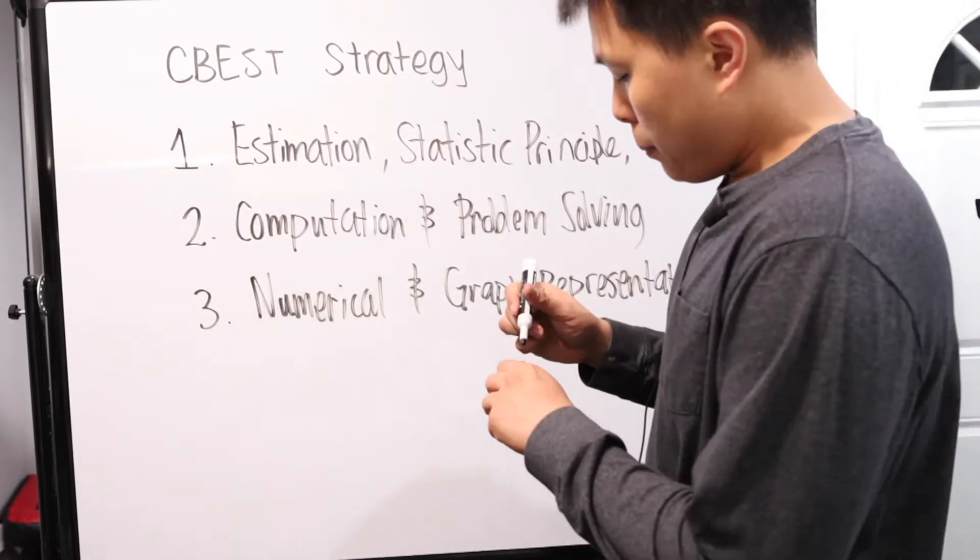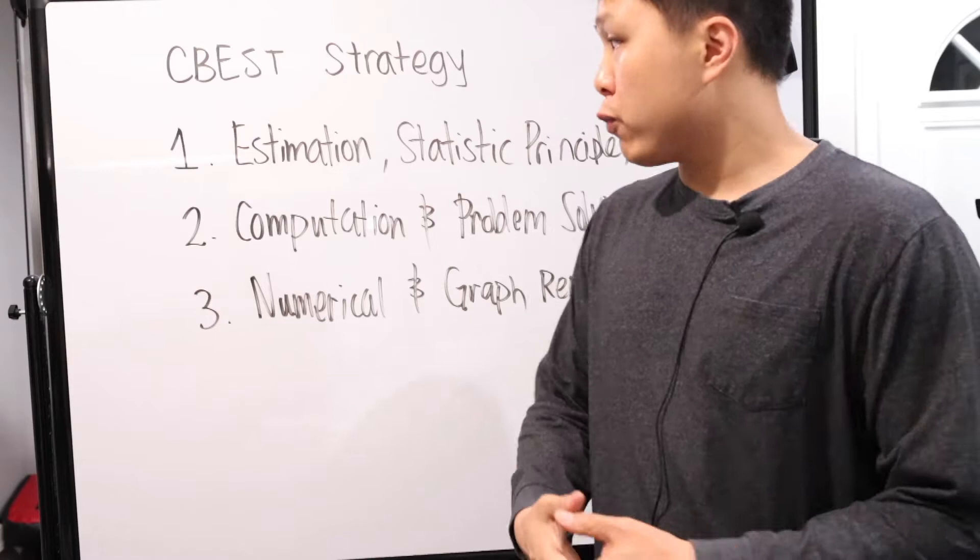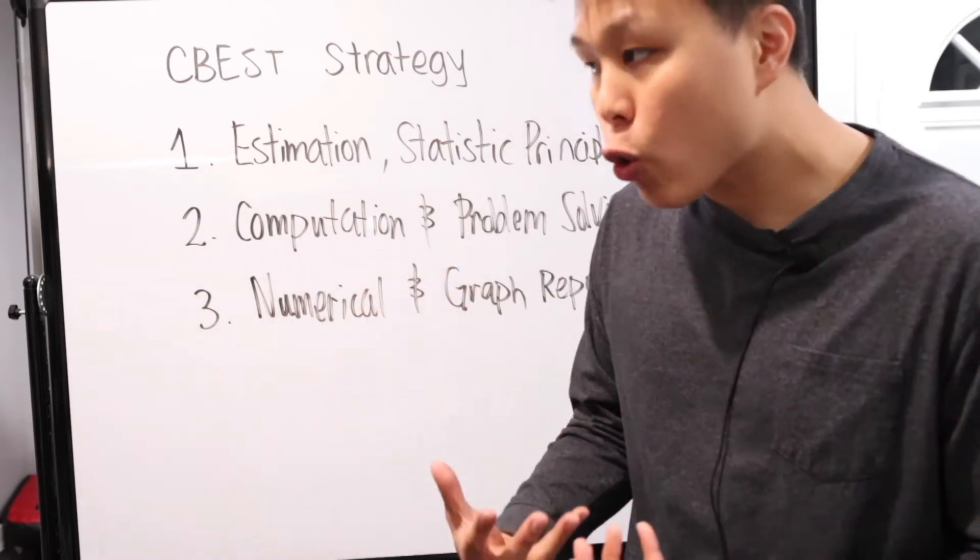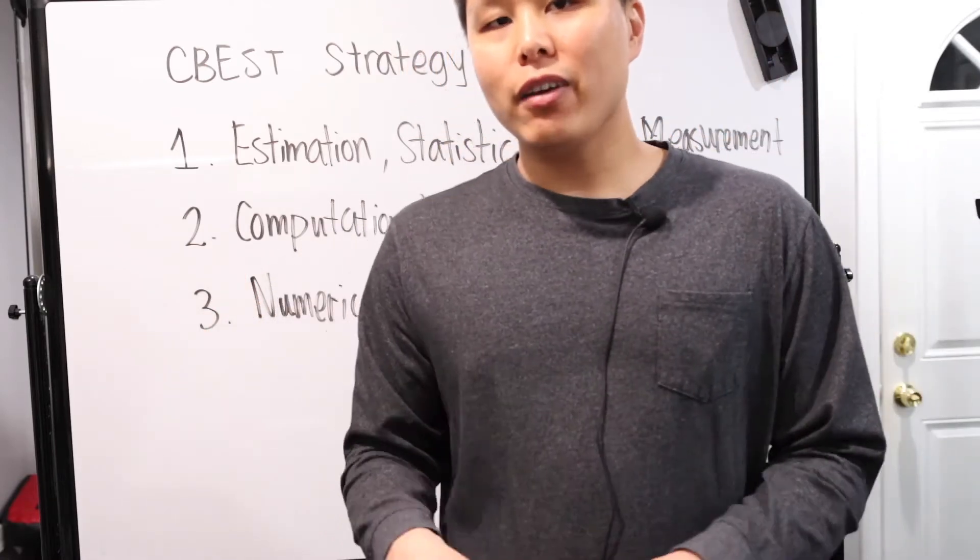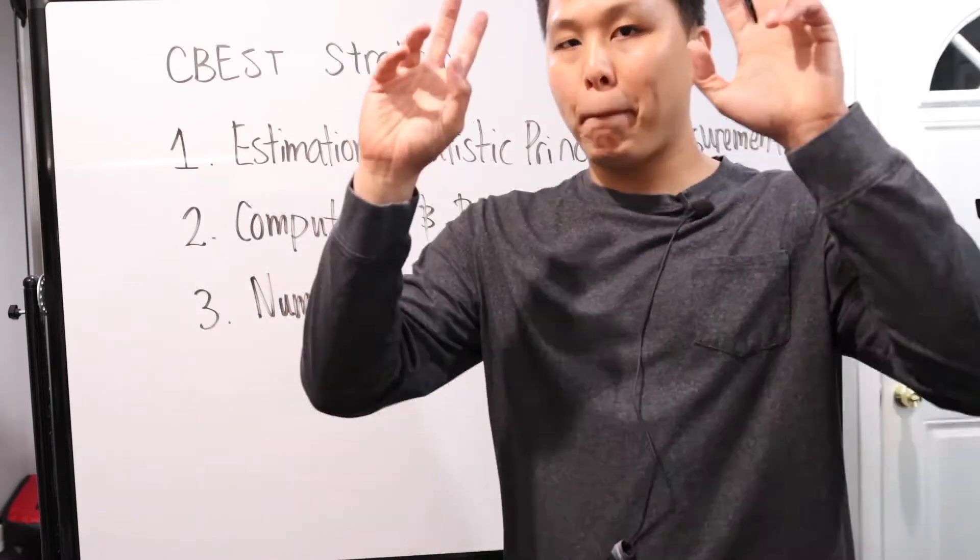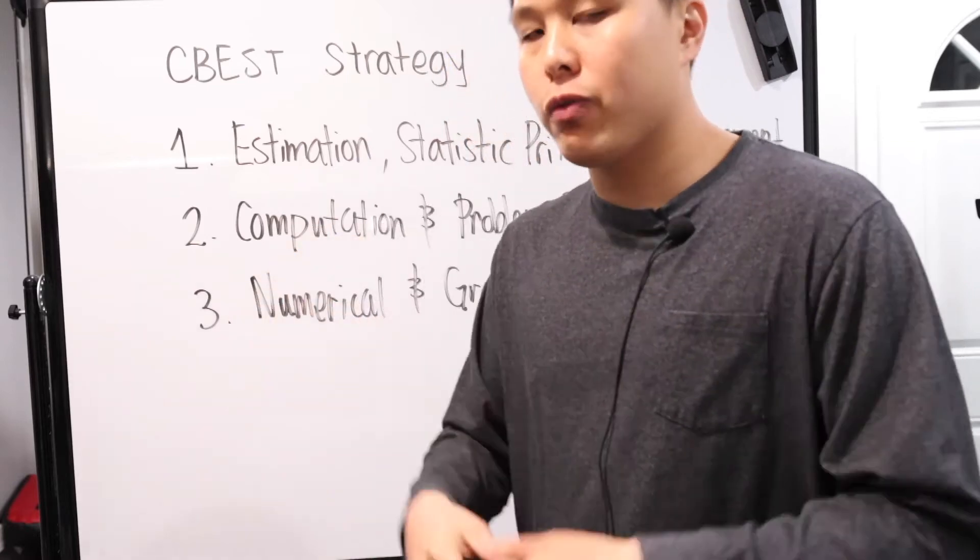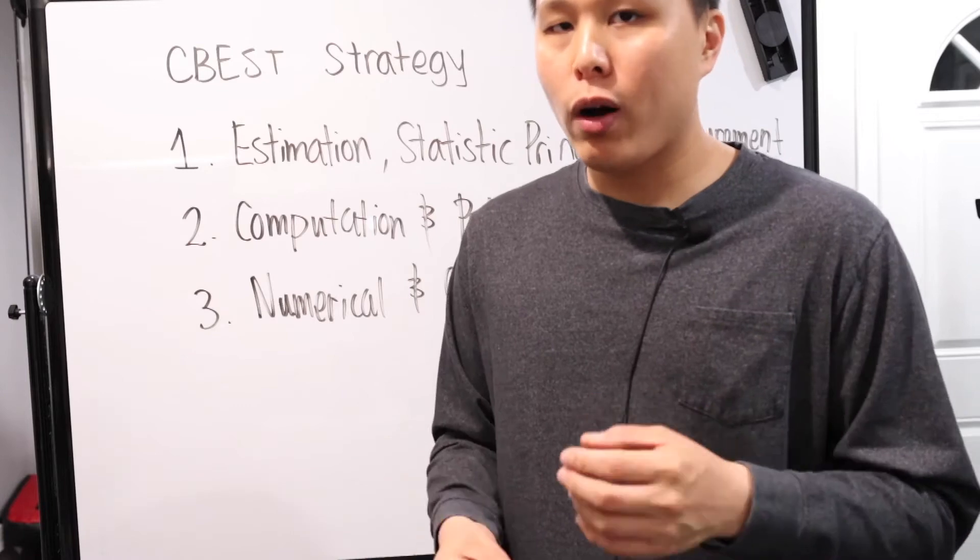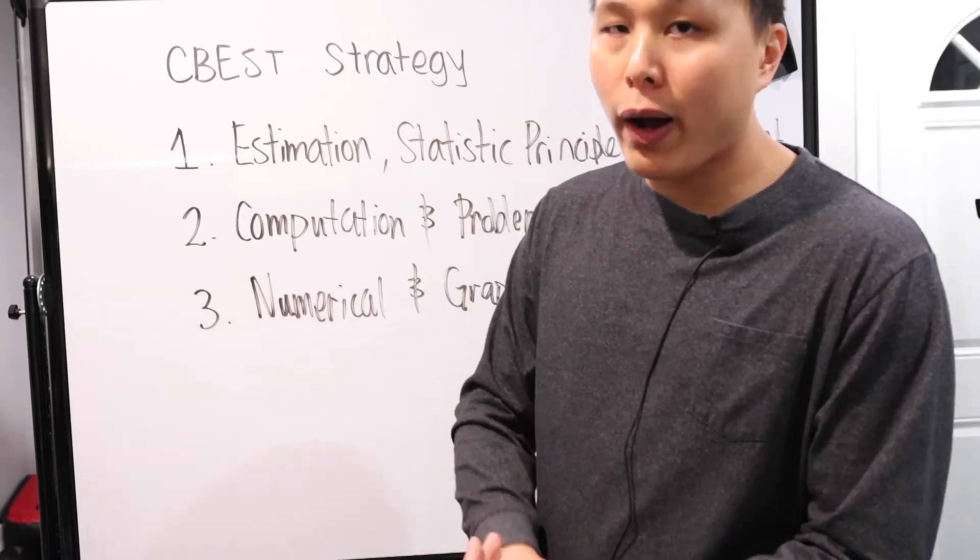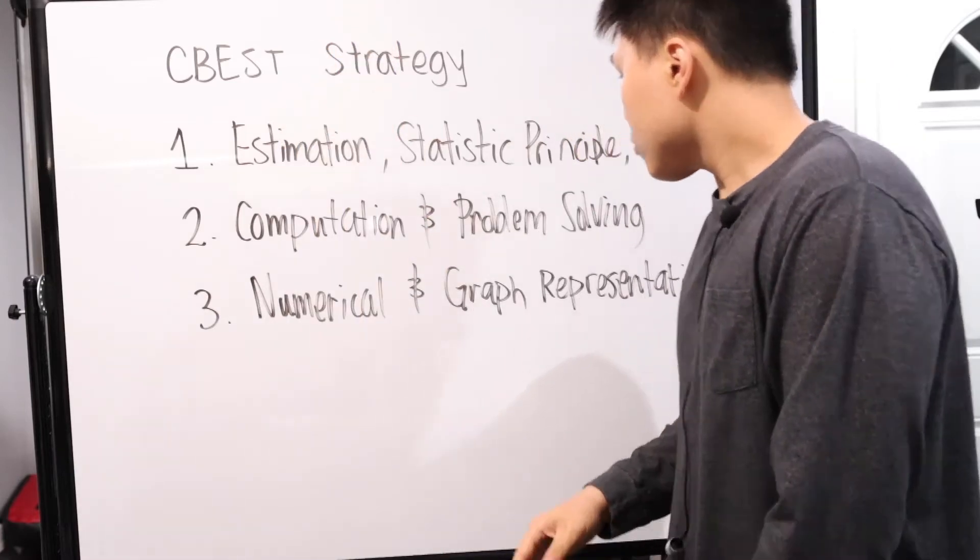So basically, what does that mean? That means that a lot of the quote unquote complex math, the ones that we are extremely scared of will not show up in this exam. You have your estimation. So estimation is basically, it's kind of annoying, these kinds of problems. But basically, they give you problems that they expect you to be able to round, round numbers up and down, and then choose the best answer. If the problem is written well, then of course, the best answer is going to be obvious. But then you have to be very careful of the trick questions, where the problem is not written so well, and all the numbers are so close together. But that's basically what estimation is. It boils down to mainly, can you round? Do you know how to round? And then figure out or estimate the answer to the problem.